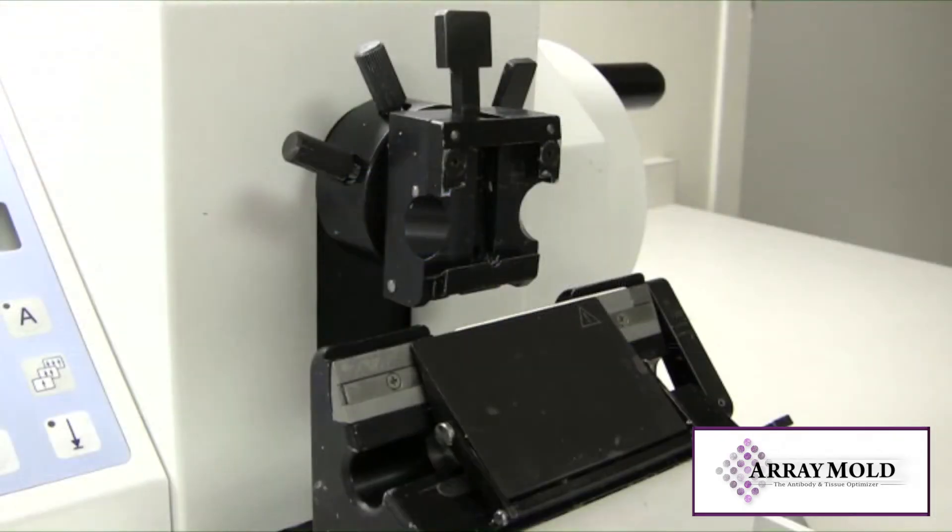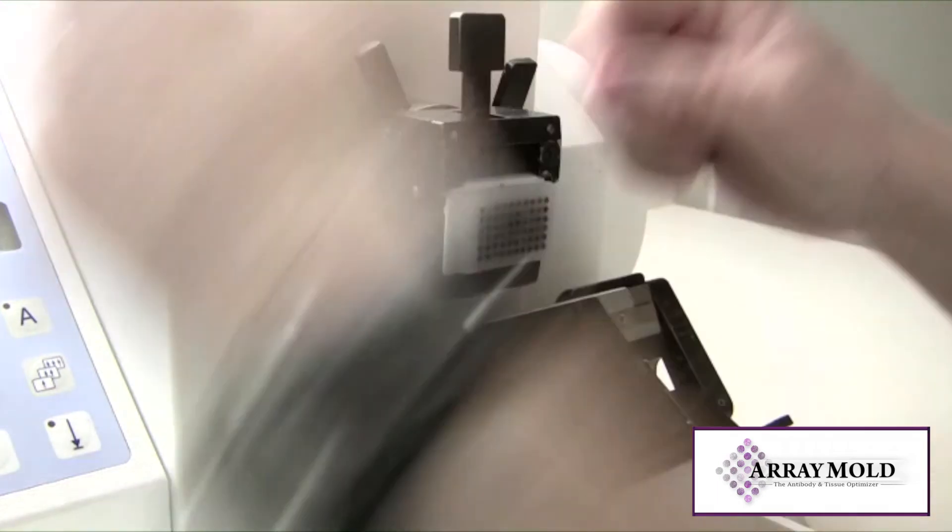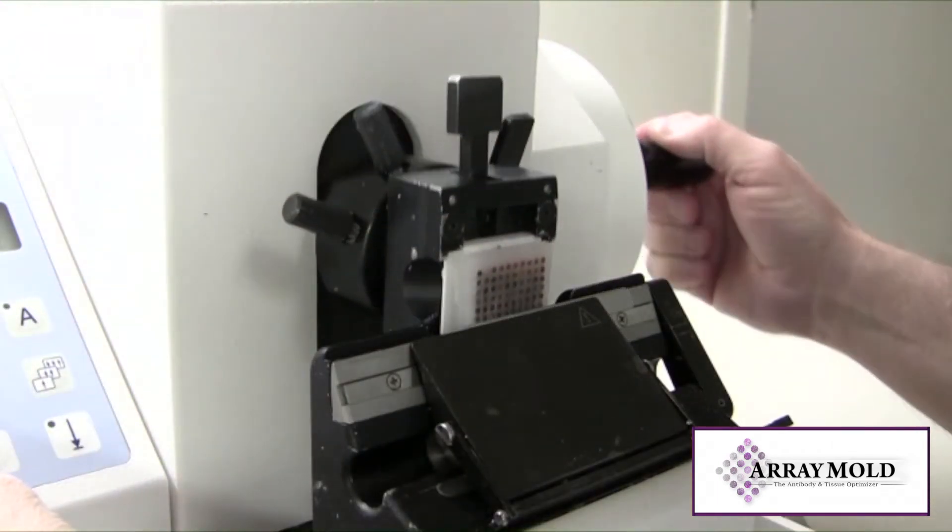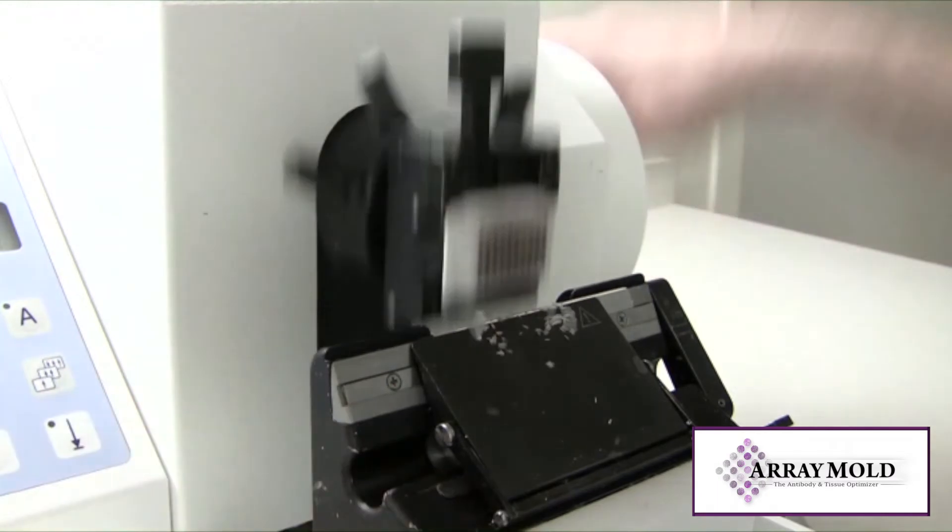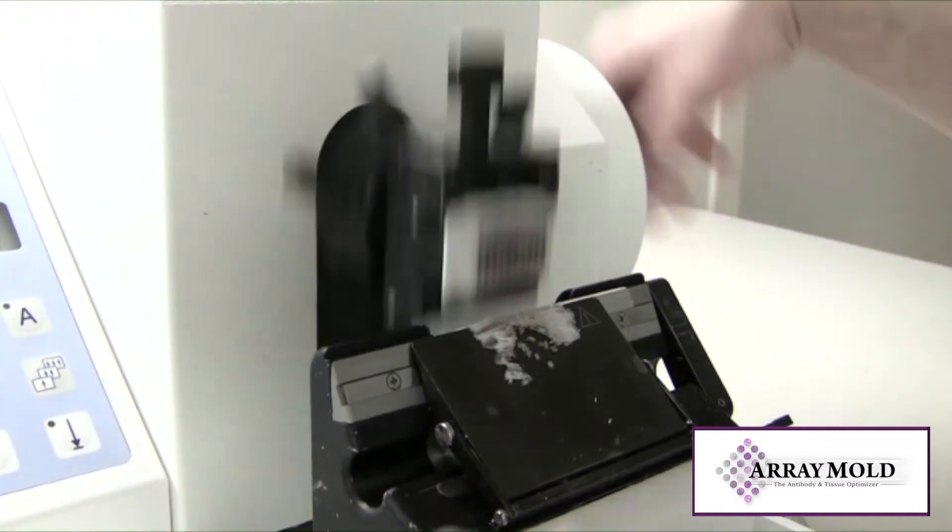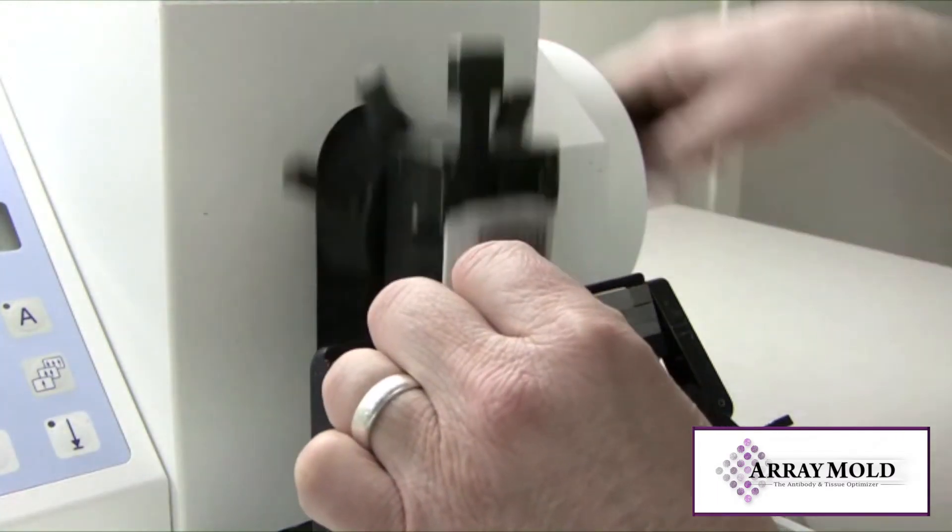First trim into your array block so the surface is flat. If your microtome chuck is at a different angle than your array block, you may want to adjust the chuck so it's flat against the block. You don't want to cut away valuable tissues facing into your array block.